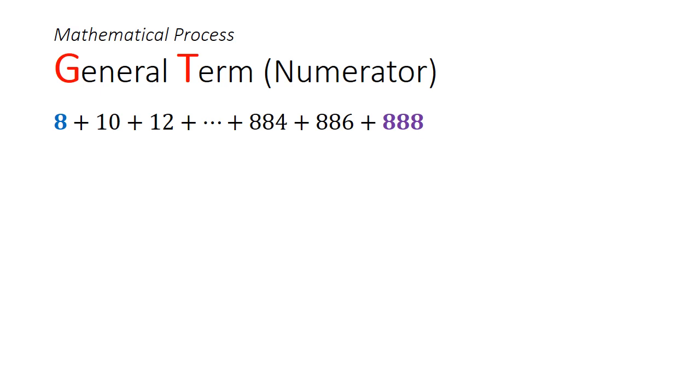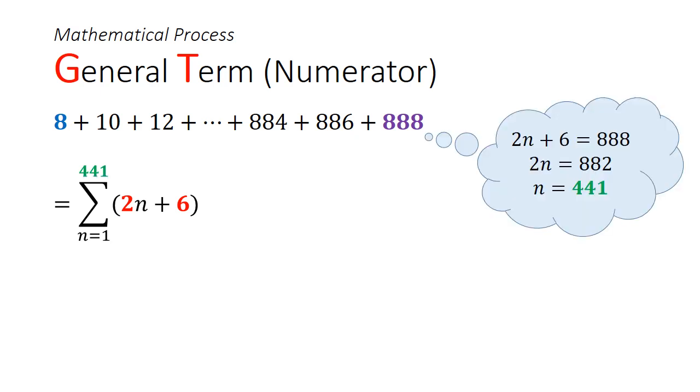Looking at the sum in the numerator, we can see that the common difference is plus 2 and the zeroth term is 6. So this gives us a sum of 2n plus 6 starting from n equals 1. Since 888 is the last term, we can substitute that into the general term and work out that this must be the 441st term. Applying the summation formula, half times the number of terms, which is 441, and the sum of the first term 8 and the last term 888, we can find an expression for the sum of the numerator.